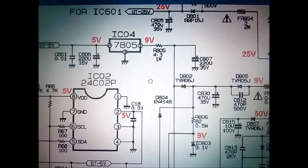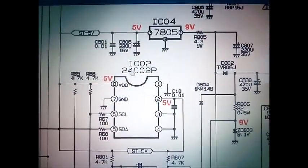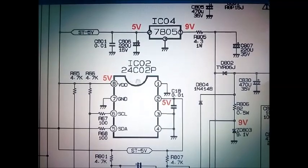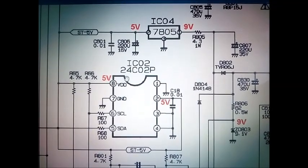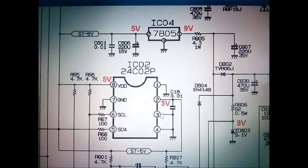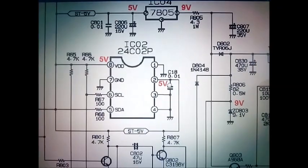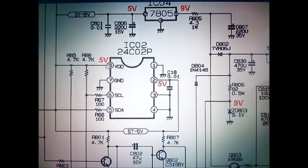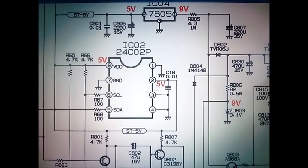Input is 9 volts, output is 5 volts pin number 2. Pin number 3 is ground. Next, check IC202 number 24C02P. 8 number pin is VDD plus 5 volts, pin 1 is ground, pin 2 is 5 volts.